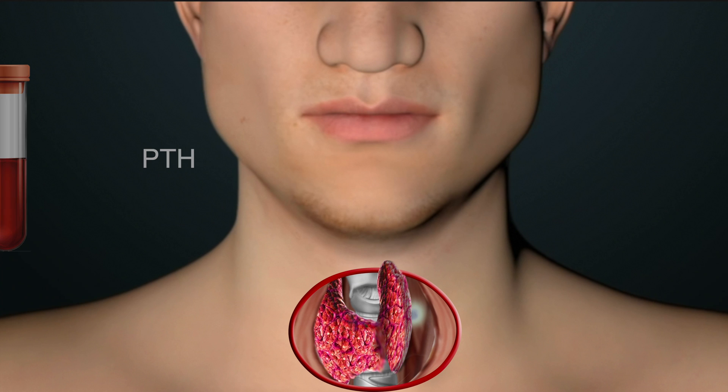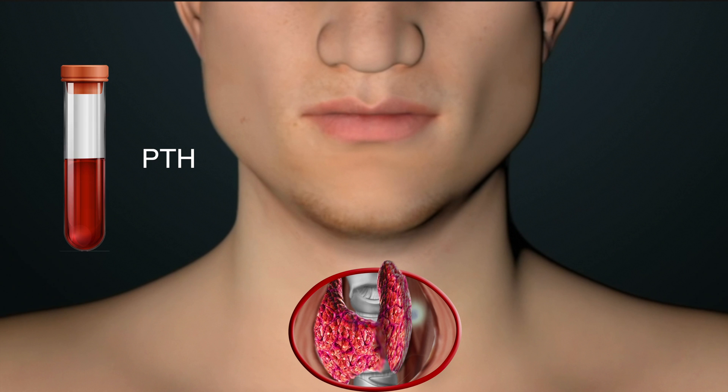Another way to confirm that the overactive parathyroid gland has been removed is to compare the parathyroid hormone, or PTH, level in the blood before and after removal of a suspected overactive parathyroid.